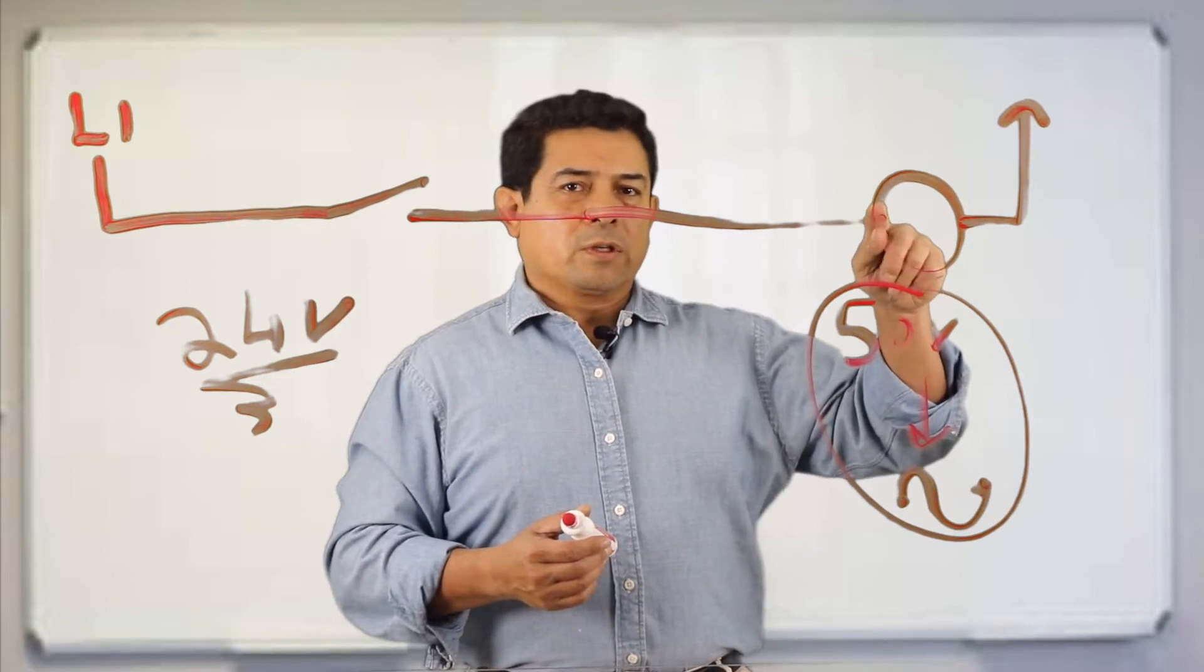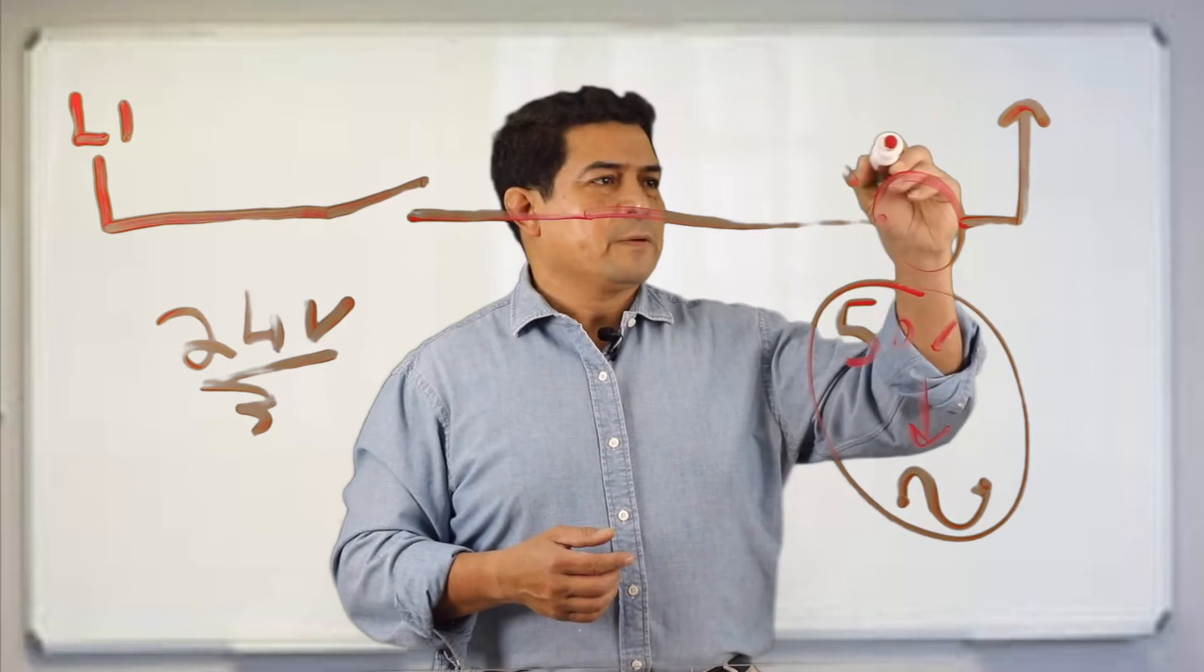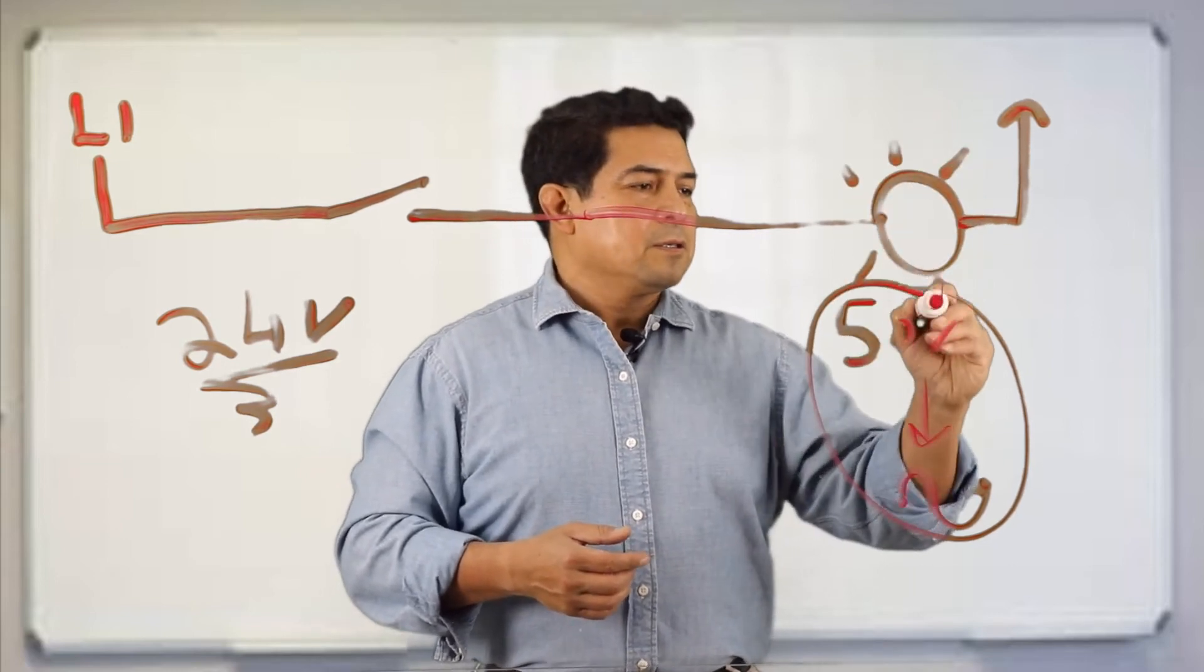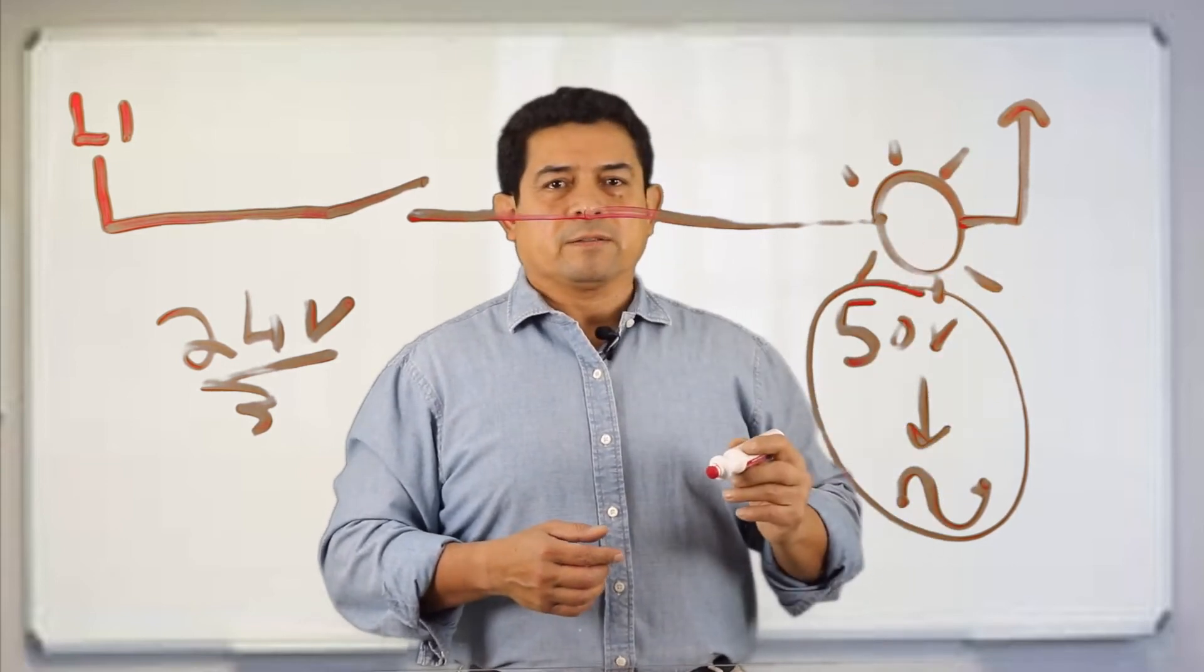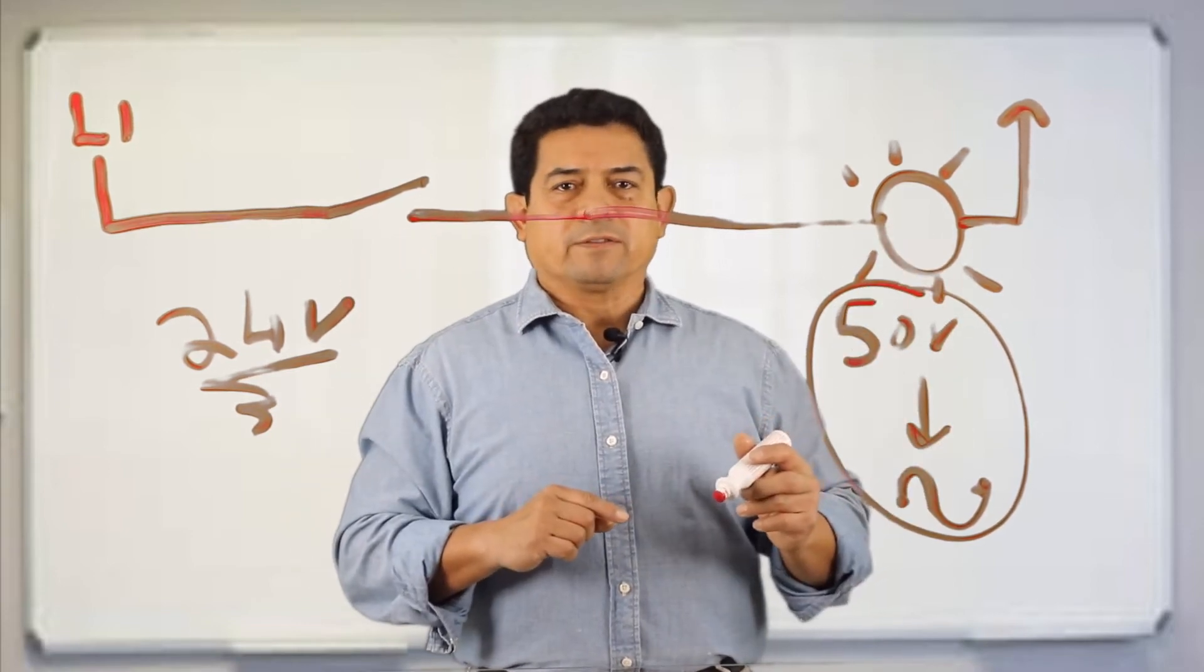The load is what's going to convert electrical energy into another form of energy. For example, if I was to do this, now this is a light. So by opening or closing this we can turn that light on and off.